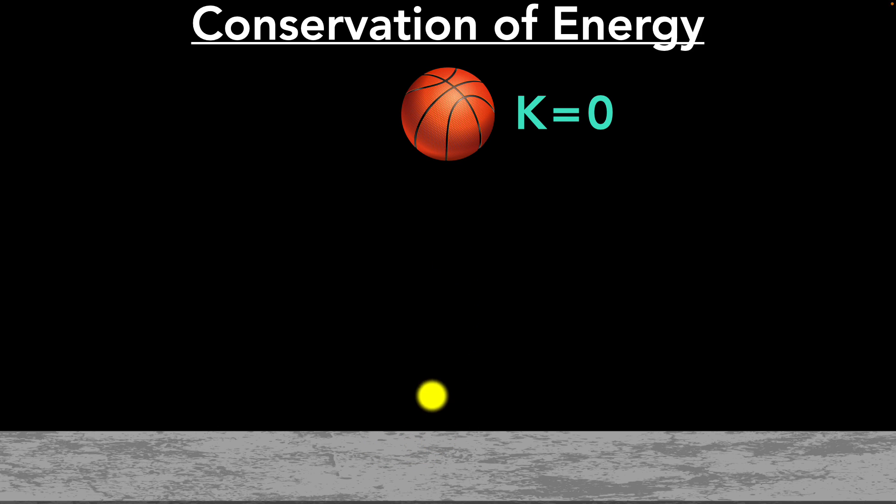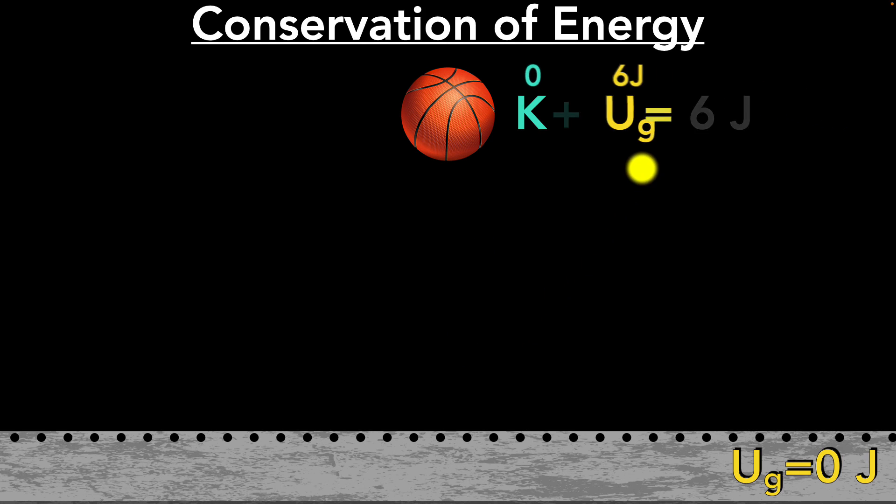But we know the ball is high above the ground, so the system of the ball and the earth has some potential, some gravitational potential energy. Let's say for the sake of taking some numbers, that potential energy is six joules. And we're going to consider the potential energy of the system when the ball is touching the ground to be zero. Okay, so right now, the total energy of this ball-earth system is six joules, right? What happens when we let the ball go?